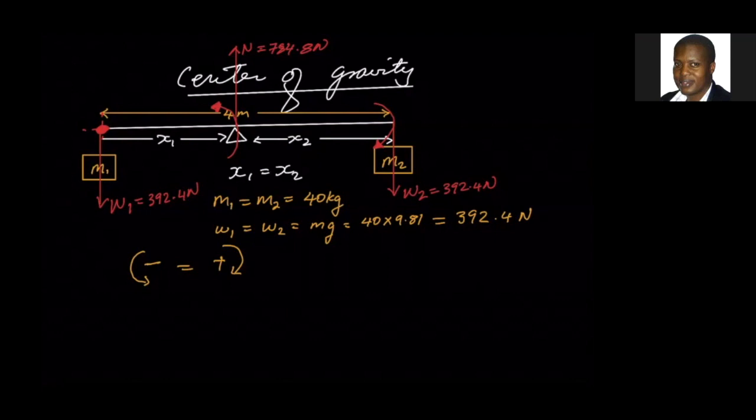So now we can go ahead and substitute that in the equation of the torque, which is the force times the perpendicular distance. First we look at the ones that are rotating it anti-clockwise, and that's the normal force, that will be 784.8 multiplied by x. The one that's rotating it clockwise is going to be 392.4 multiplied by the distance from the left all the way to m2, and we all know that that's four meters. So x1 will be the same as 392.4 multiplied by 4 divided by 784.8.